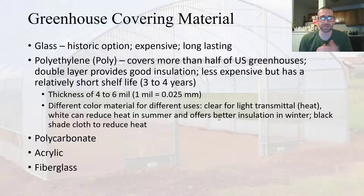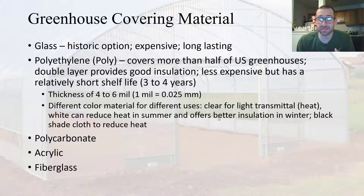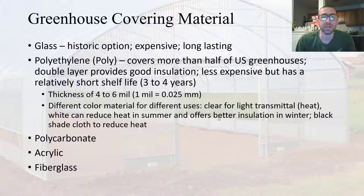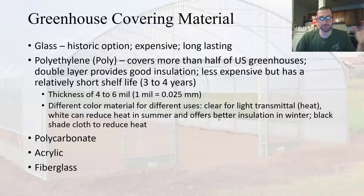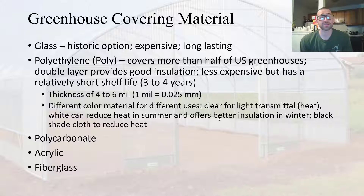You can utilize different colors of poly for different uses. Clear poly allows for the best light transmittal and increases heat. White poly reduces heat in the summer — it doesn't allow as much light to transmit through — but offers good insulation in the winter. Another option to reduce heat is to cover with a black shade cloth, which absorbs light on the outside instead of passing it through. Glass and poly are the two most common covering materials, but there are other options: polycarbonate, acrylic, and even fiberglass can be used.